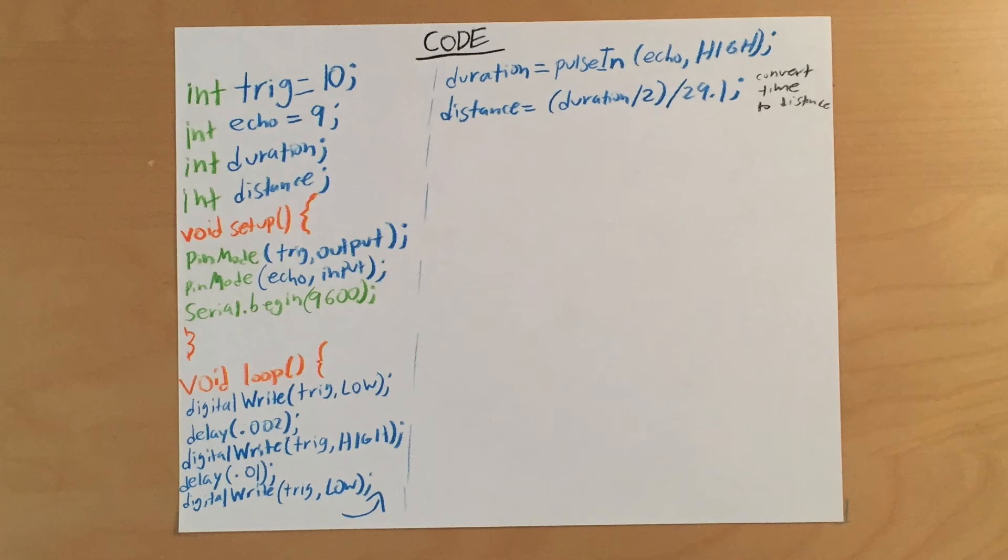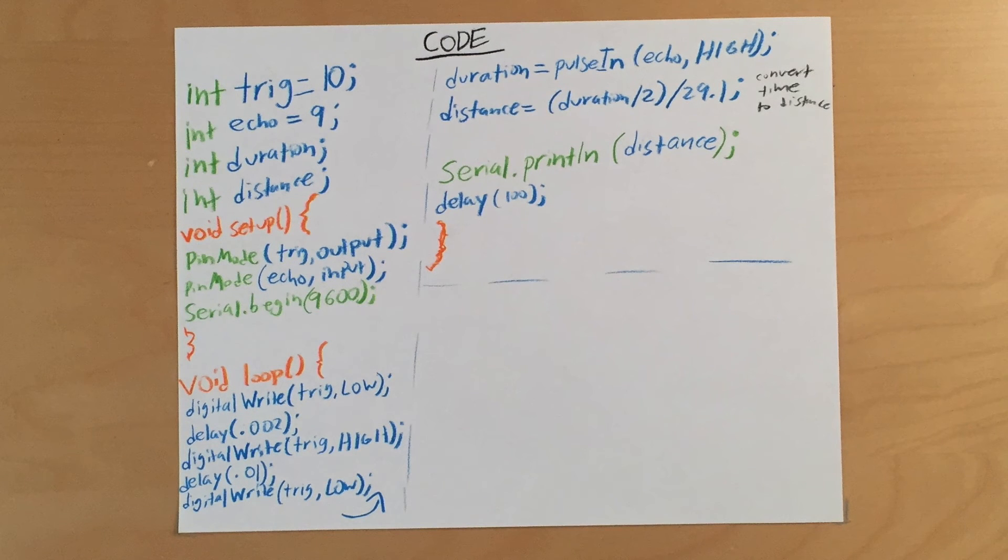Set distance equal to duration divided by 2 divided by 29.1. That'll take duration and convert that from time into centimeters. Now type serial print line distance and then delay 100. This will print the distance in the serial monitor. And that wraps it up for the code. You can find all this in the description below.